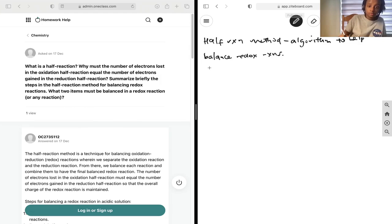Step one: write out your half reactions, your oxidation reaction and your reduction reaction.